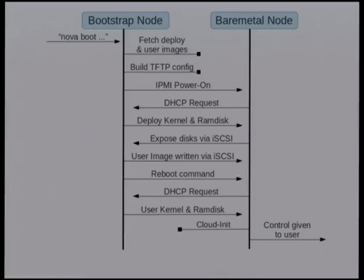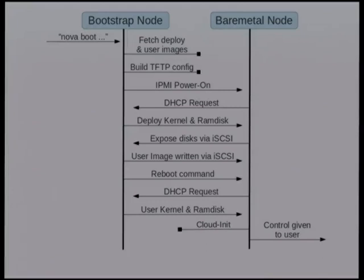When someone issues a boot command or clicks Start Instance in the Horizon UI, what happens differently in this situation versus KVM or regular virtualized environments: the Nova Compute agent actually downloads all the images locally, does some injection - though we're going to remove that - and builds a TFTP config file based on the Mac addresses it knows about from that hardware. Then it sends an IPMI command to turn on the box. The box comes up, makes a DHCP request, and gets sent a special kernel and RAM disk, which mount the local disks and expose them as an iSCSI endpoint, pinging back to the Nova Compute node.